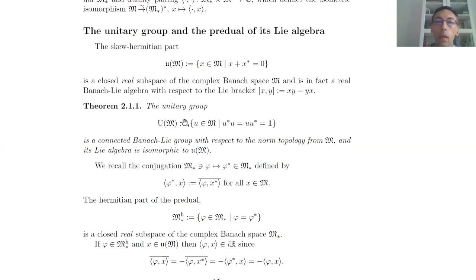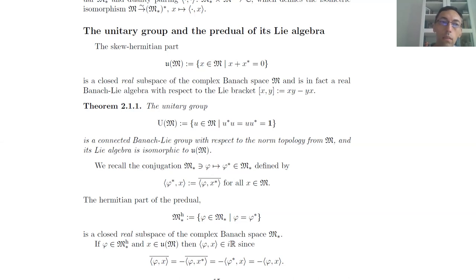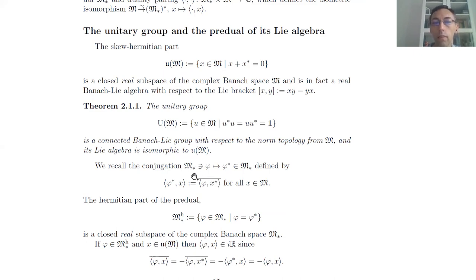In a way we would like to consider the co-adjoint action of this group. However, in infinite dimensions the dual of this algebra is a rather complicated object. Fortunately this dual has a simpler part, namely the predual, and we will consider the action of u(M) on that predual. In order to define what we will call the pre-adjoint action, we need to define the self-adjoint part of the predual. The predual was the space of all continuous linear functions on M.